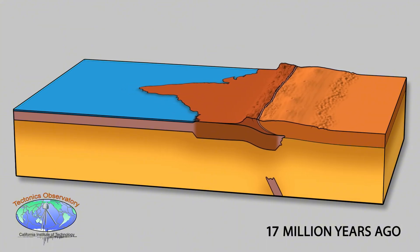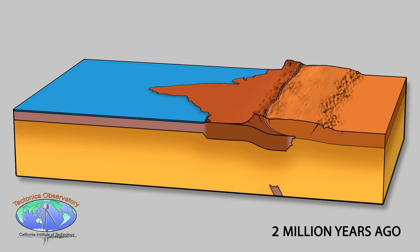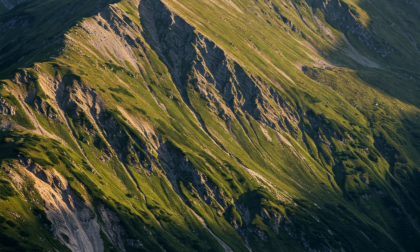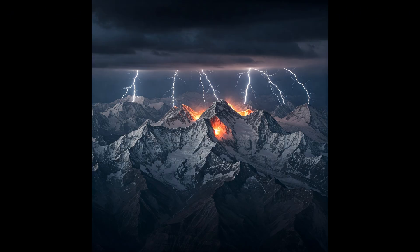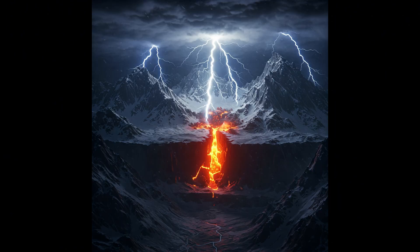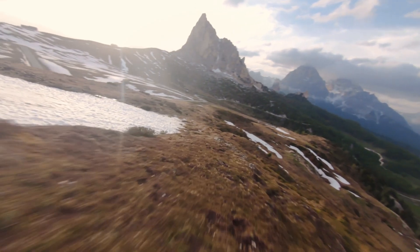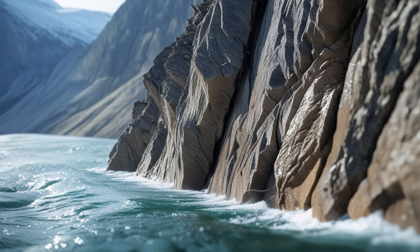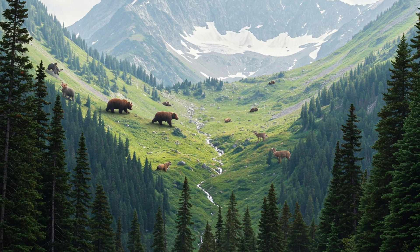Each mountain is the result of this massive collision. Even though these movements may be tiny, the process can span millions of years. But mountains don't just rise — they also erode over time. Weathering, water, wind, and ice contribute to the gradual wearing down of mountains. The peaks, while they rise, also change shape as time passes. It's astonishing to see how these forces, despite being so slow, leave permanent marks on the landscape.